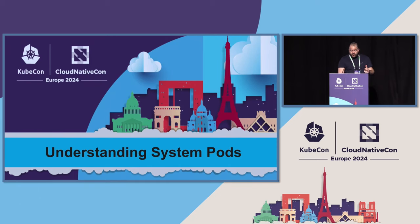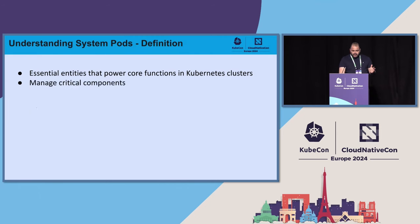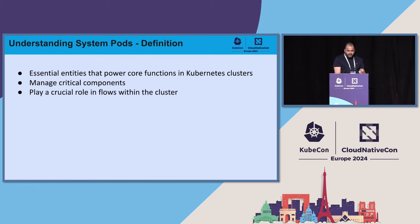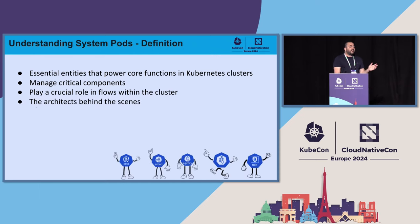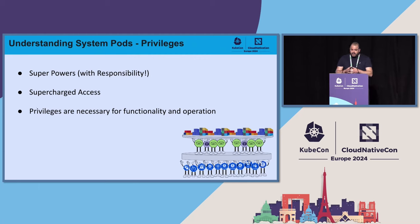Now that we understand system pods are very special, let's get to know them better. By definition, they are responsible for executing key tasks and maintaining the cluster's overall functionality. They play a pivotal role in managing critical components and ensure smooth operation of the cluster — basically, they are the architecture behind the scenes. With this kind of operation, they need elevated privileges to perform those critical tasks. We all know that great power comes with great responsibility; these privileges are a must by their nature in order to operate, but we must use them wisely to ensure the security and integrity of our cluster.